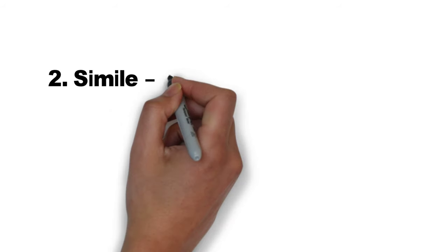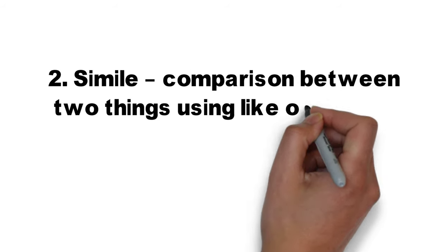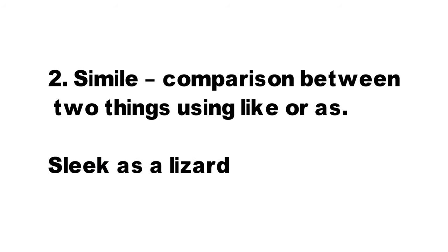Next, Simile — comparison between two things using 'like' or 'as'. In the poem we compare: 'Sleek as a lizard' — that's why the bird is moving and the lizard is moving.